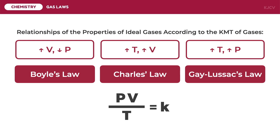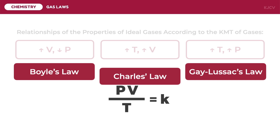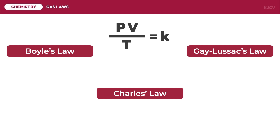Combining these three laws, KMT states that the product of the pressure and volume of the gas together with the reciprocal of the temperature is constant in any case. This means that we can compute for the unknown variable when there are three known variables — two from the first situation and one from the other situation.